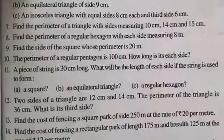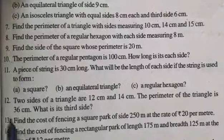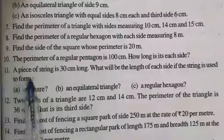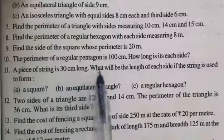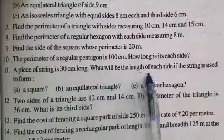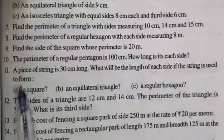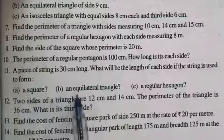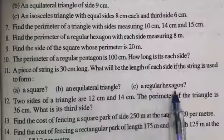Students, try to solve question number 10 of exercise 10.1 by yourself. Question number 11: A piece of string is 30 centimeters long. What will be the length of each side if the string is used to form: A) a square, B) an equilateral triangle, C) a regular hexagon?